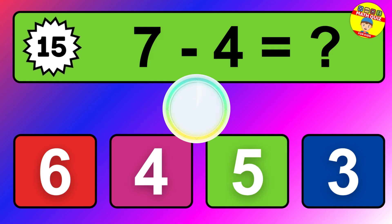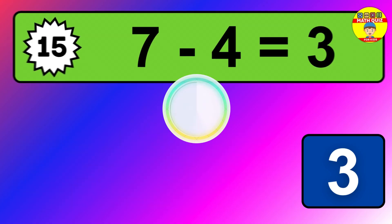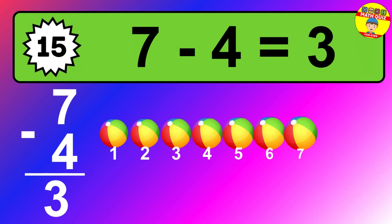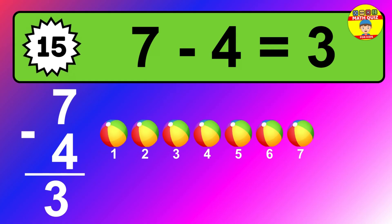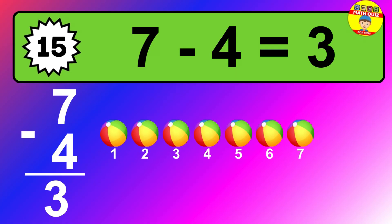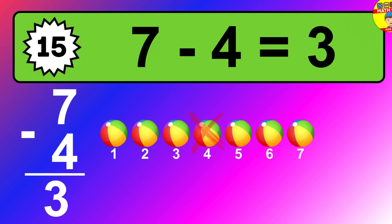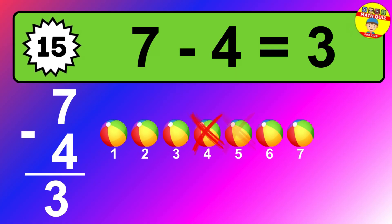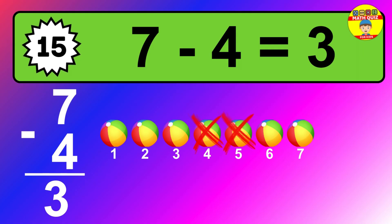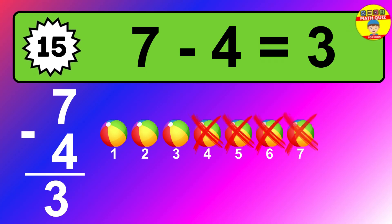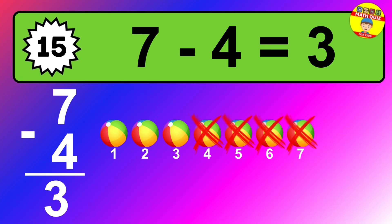Question 15. 7 minus 4 equals what? So the answer is 7 minus 4 is 3. Let's count it. 1, 2, 3.